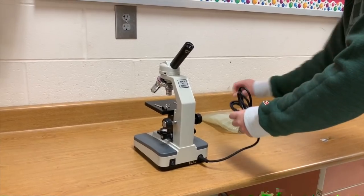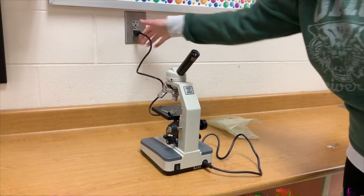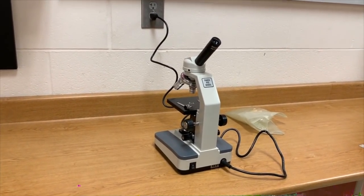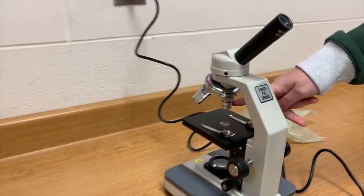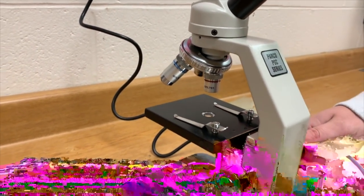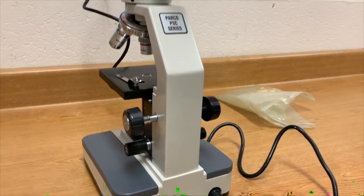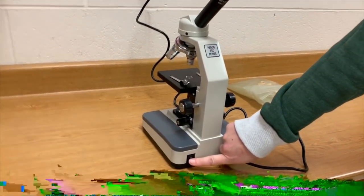Plug in our microscope, ensure that our microscope is ready to go, that we are on low power, the lowest power red objective, and that our stage is completely lowered using our coarse adjuster. And one last thing we need to do before we start is turn on the light.